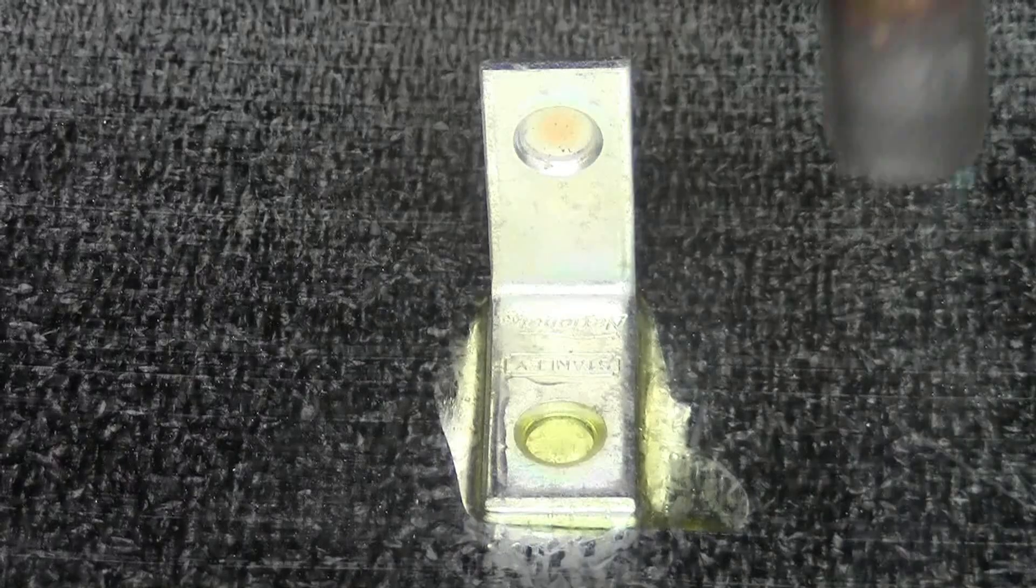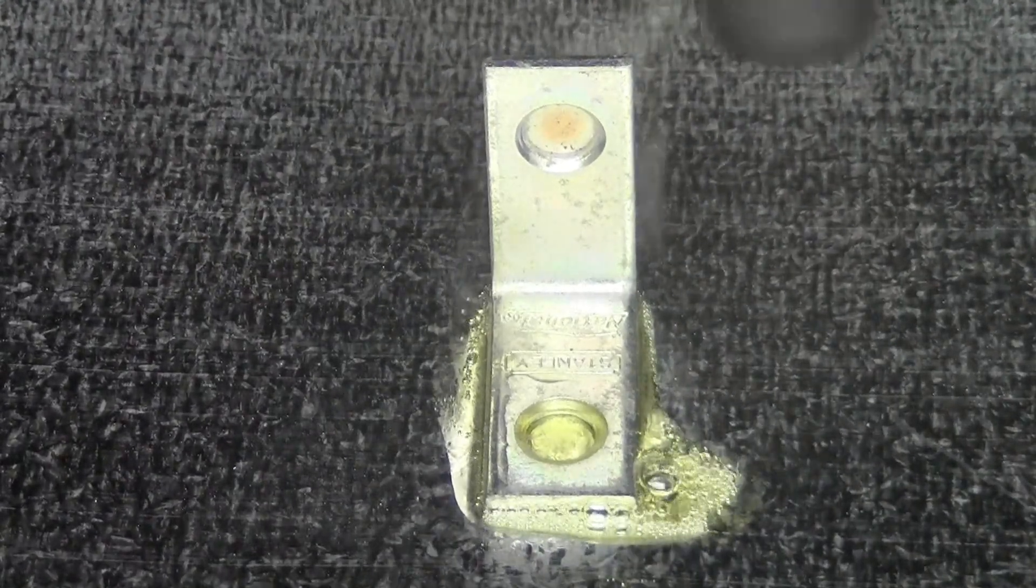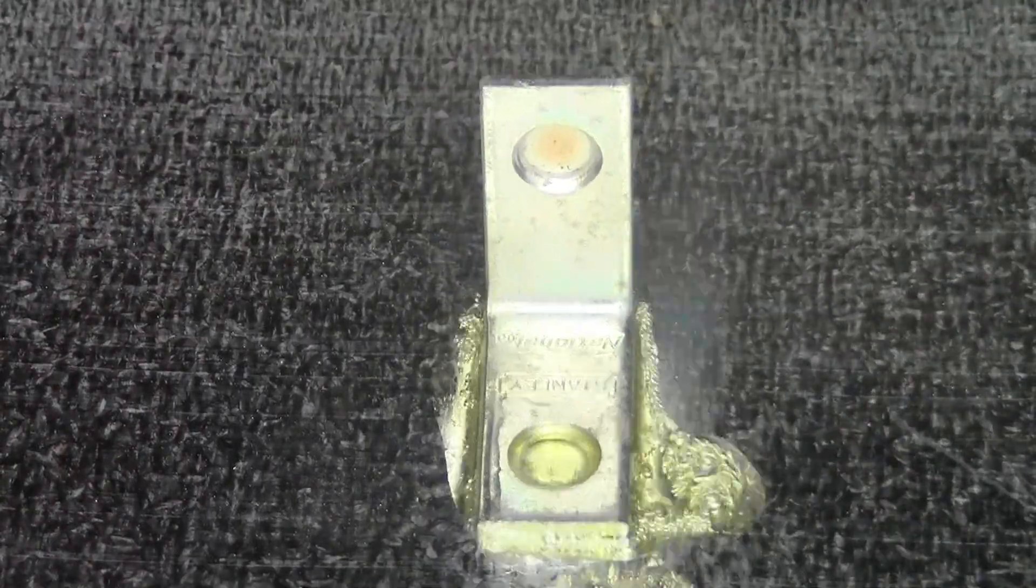We dip our rod into our flux and apply it to our joint. Then we're going to preheat broadly to bring the part up to temperature.